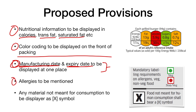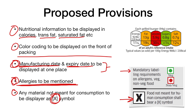Allergens must also be mentioned on the food package, since some people have allergies to peanuts or other food products. Any material not meant for human consumption should be displayed with an 'X' symbol. Additionally, mandatory labeling of veg and non-veg is required — a green color mark for vegetarian products and a red color mark for non-vegetarian products.